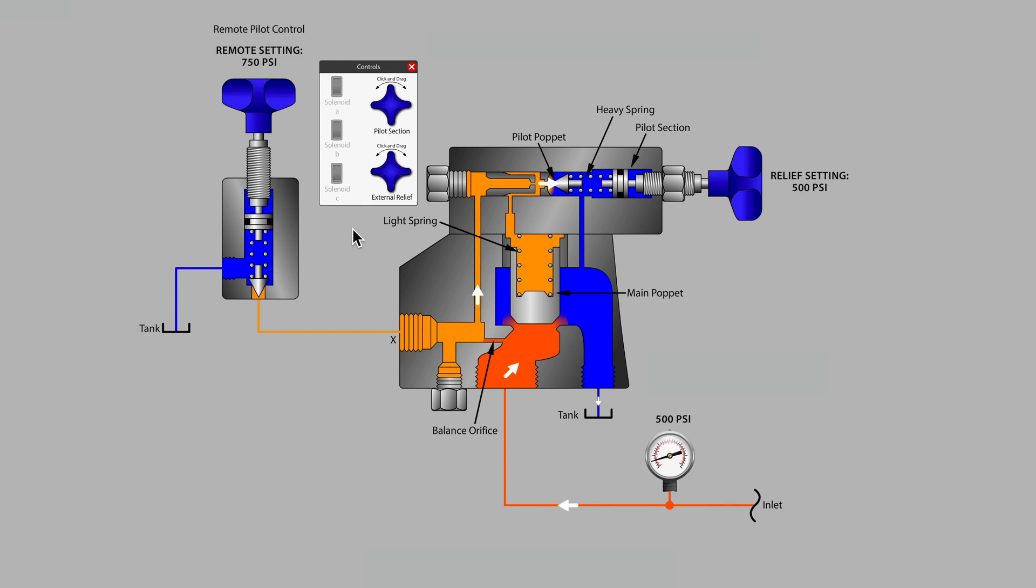We covered the main type of relief valve you see here in an earlier video. In this particular case we have essentially two pilot sections: the main pilot section that is bolted to the relief valve controlling the main relief poppet, and then at a distance, perhaps on an operator's console via port X, sometimes known as the vent port, we have a long hydraulic hose going to another small pilot section.